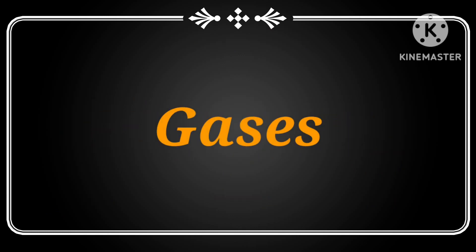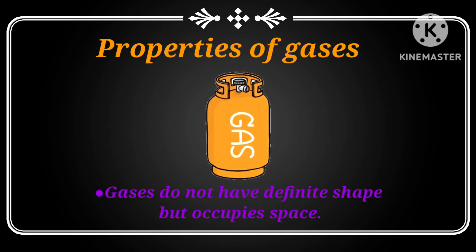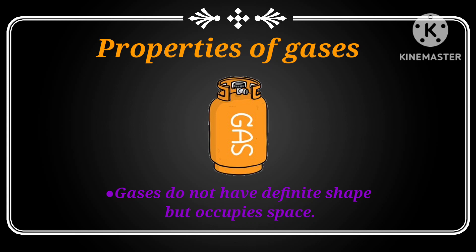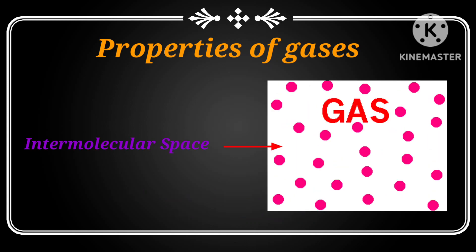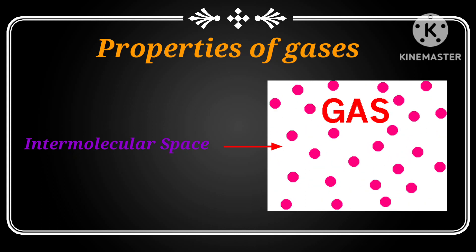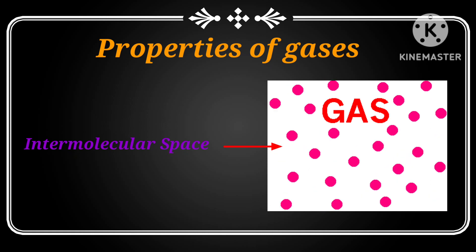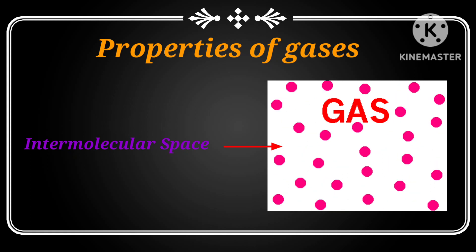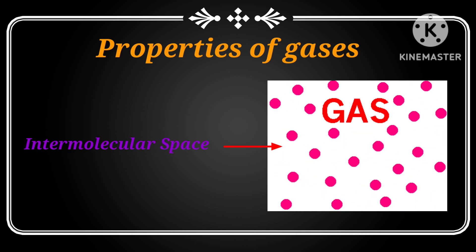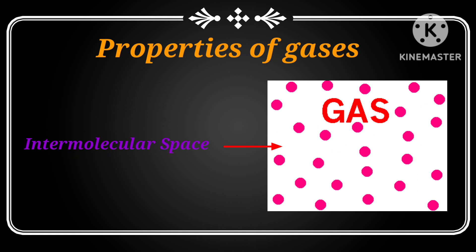Gases do not have definite shape but occupy space. Molecules in gases are very far apart and intermolecular space is very large, even more than in liquids. This is why gas occupies all the space it gets.